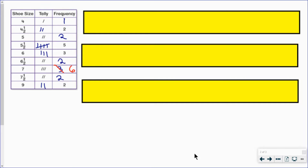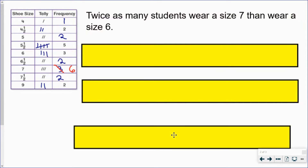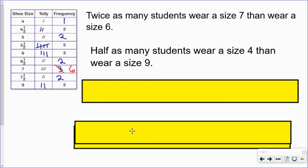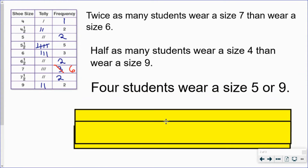Now that we've answered some questions about our frequency table, we can analyze it to make statements about the data. For example, by looking at the table I can tell that twice as many students wear a size seven than wear a size six. I can also tell that half as many students wear a size four than wear a size nine. Four students wear a size five or nine. What are some other observations you can make about this frequency table?